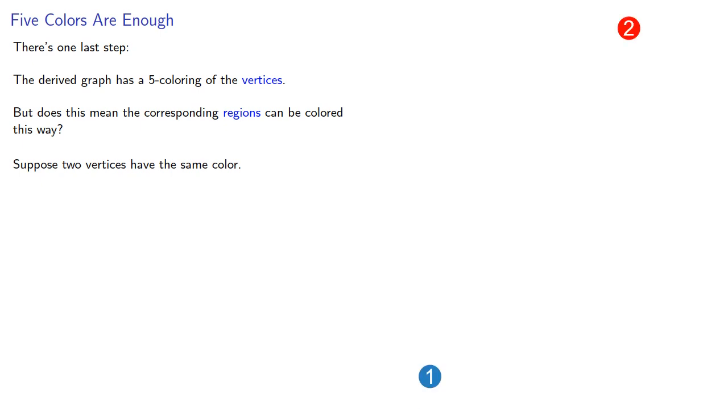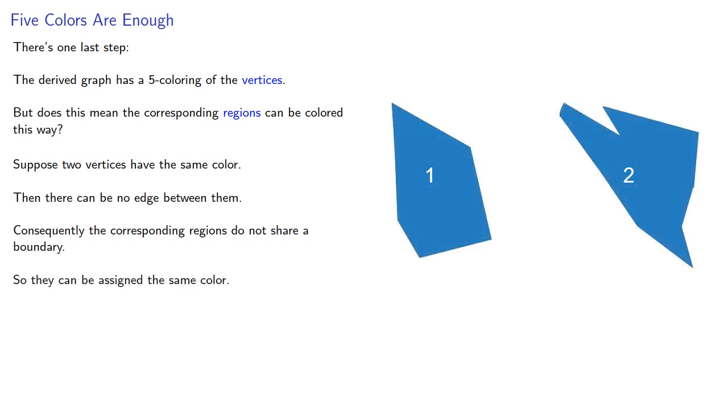There's one last step. The derived graph has a 5-coloring of the vertices. But does this mean that the corresponding regions could be colored this way? Well, suppose two vertices have the same color. Then there can be no edge between them. Consequently, the corresponding regions do not share a boundary, so they can be assigned the same color.